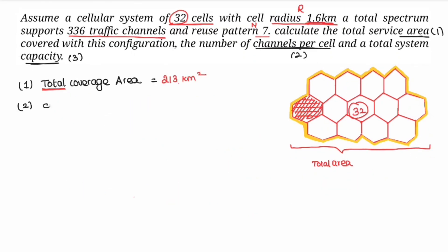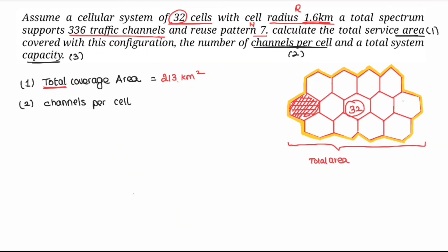Now the second thing to calculate is the number of channels per cell. Total channels in the system are 336. We need to find how many channels are assigned to each cell.